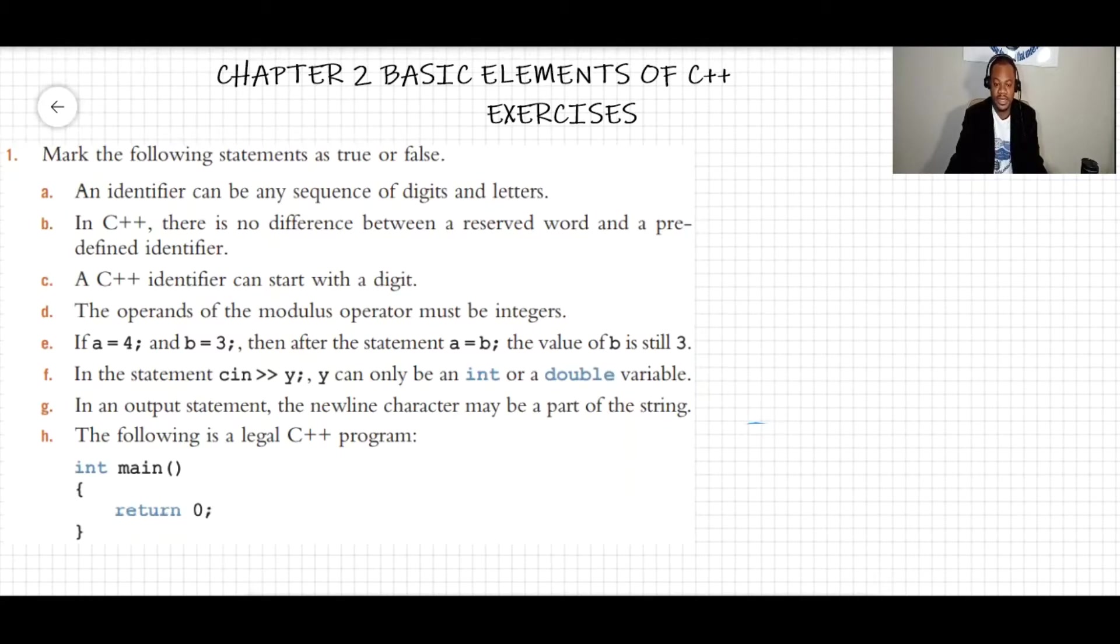A: An identifier can be any sequence of digits and letters. All right, I'm gonna say this is false because of this any sequence, that's wrong. The identifier has to obey C++ rules for identifiers.